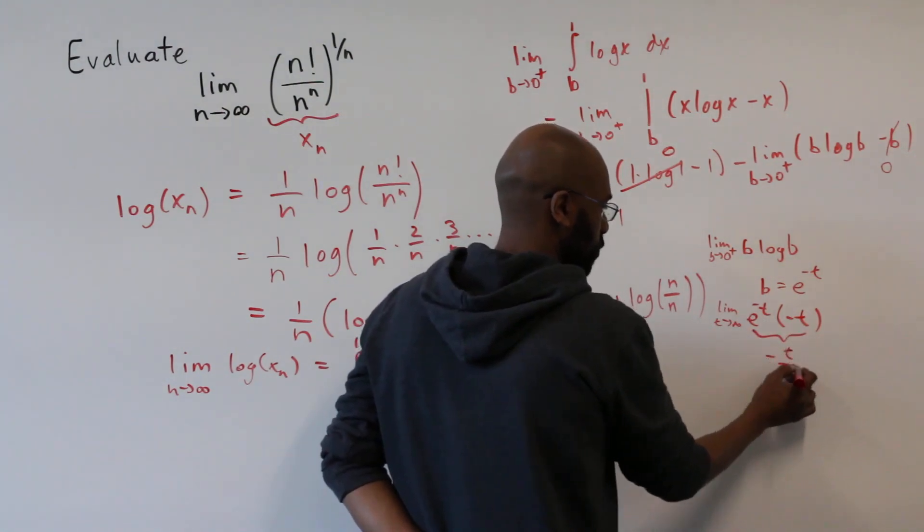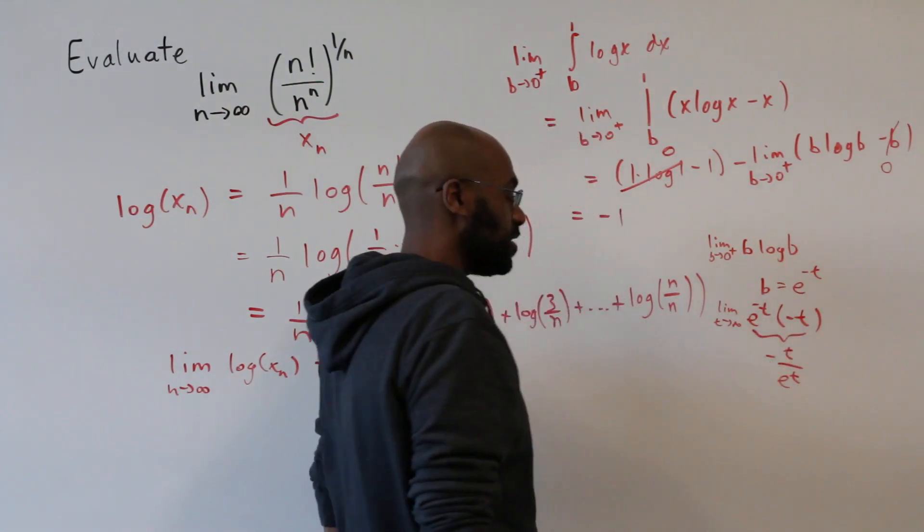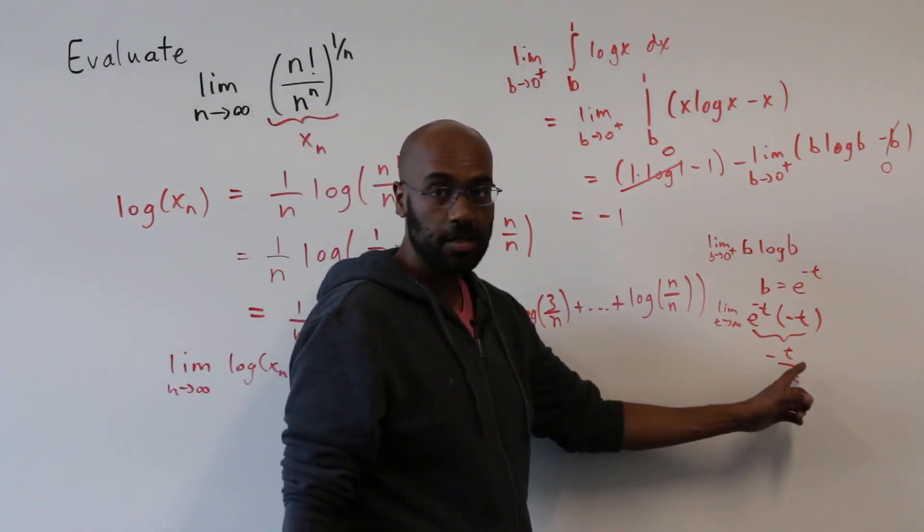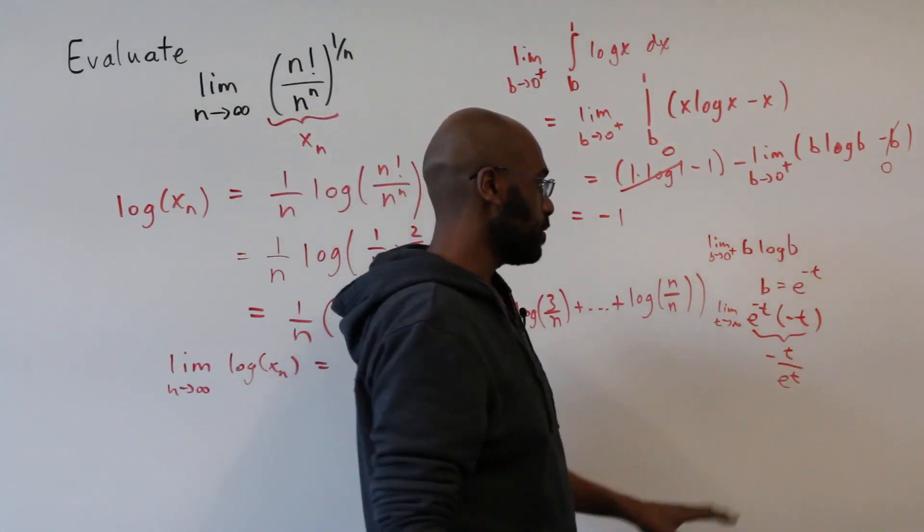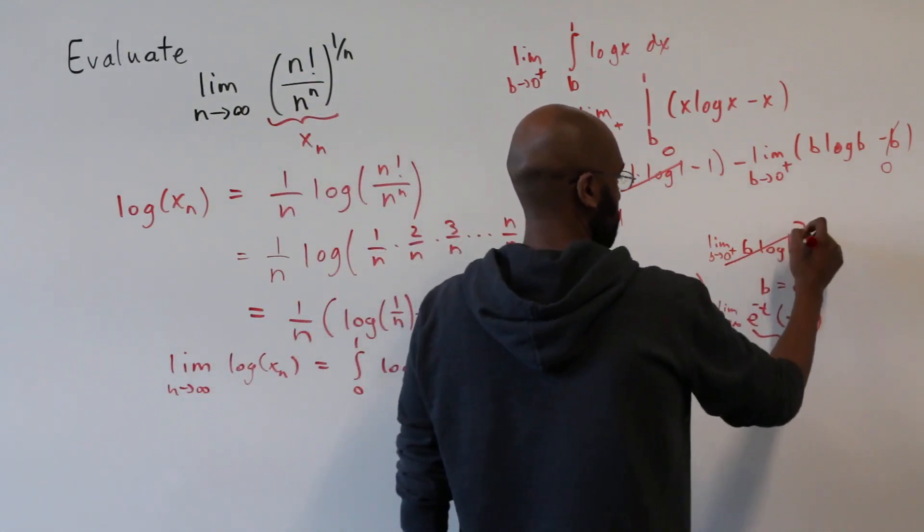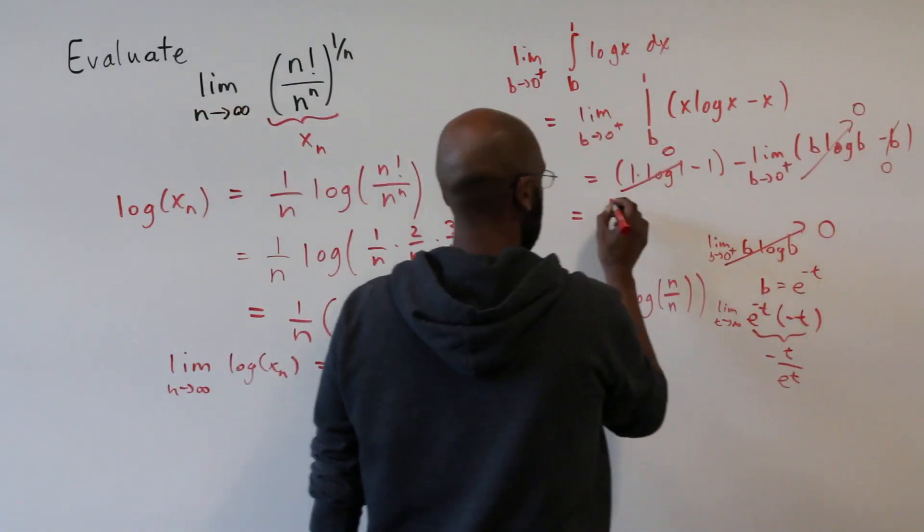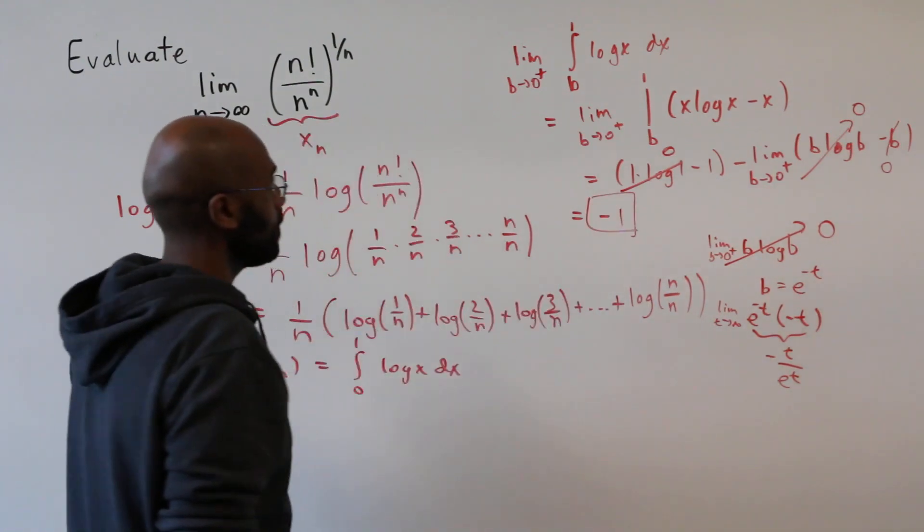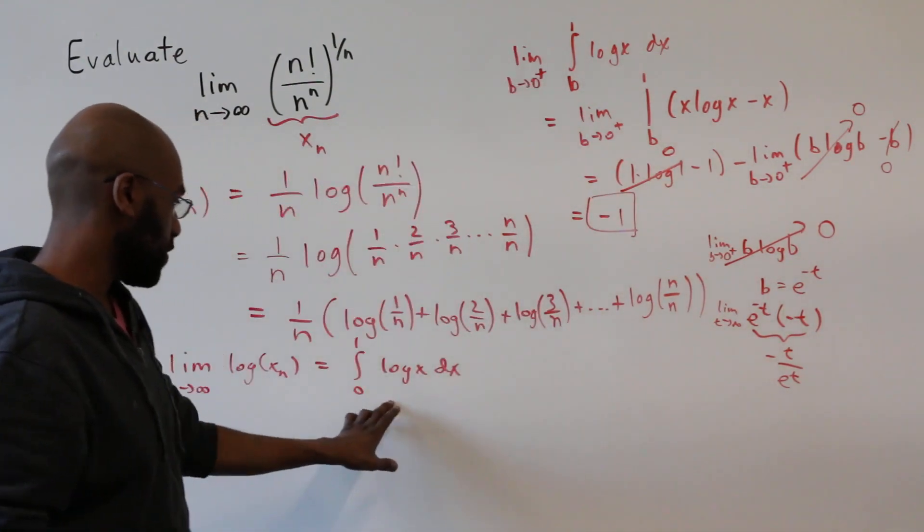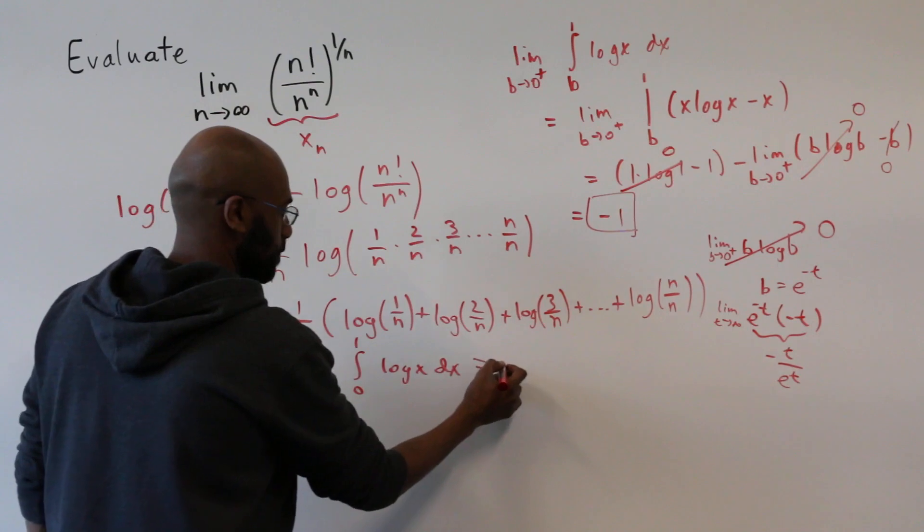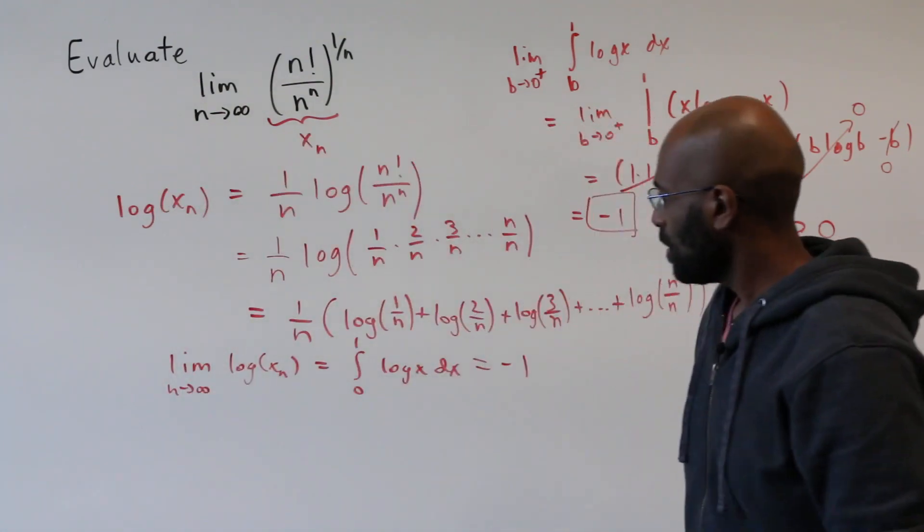Now this thing here is negative t over e to the t, and e to the t blows up compared to t, and so this thing is going to 0, and hence this goes to 0 too. Okay, so this goes to 0, meaning this whole thing goes to negative 1. So the integral we're interested in here actually is negative 1.